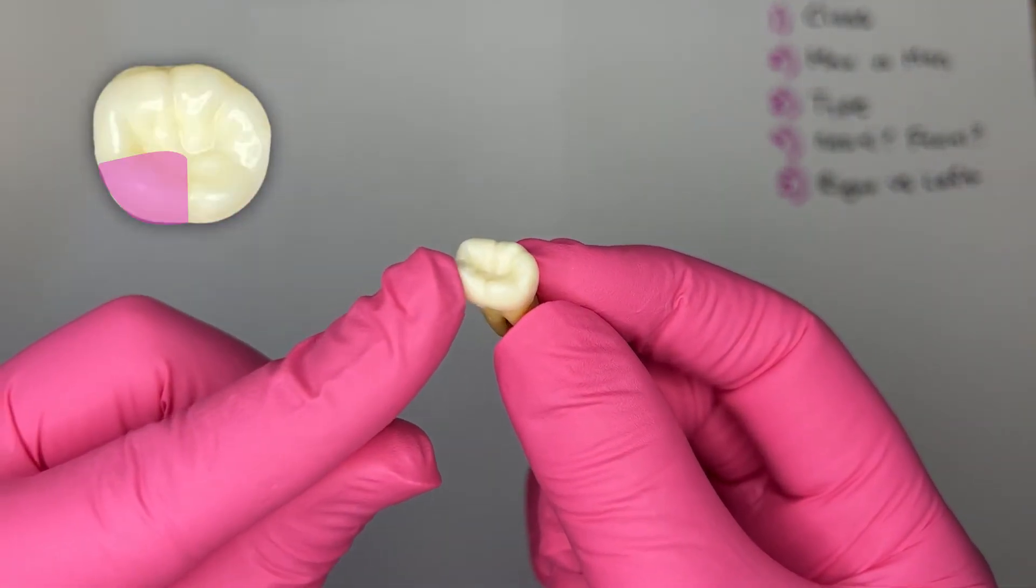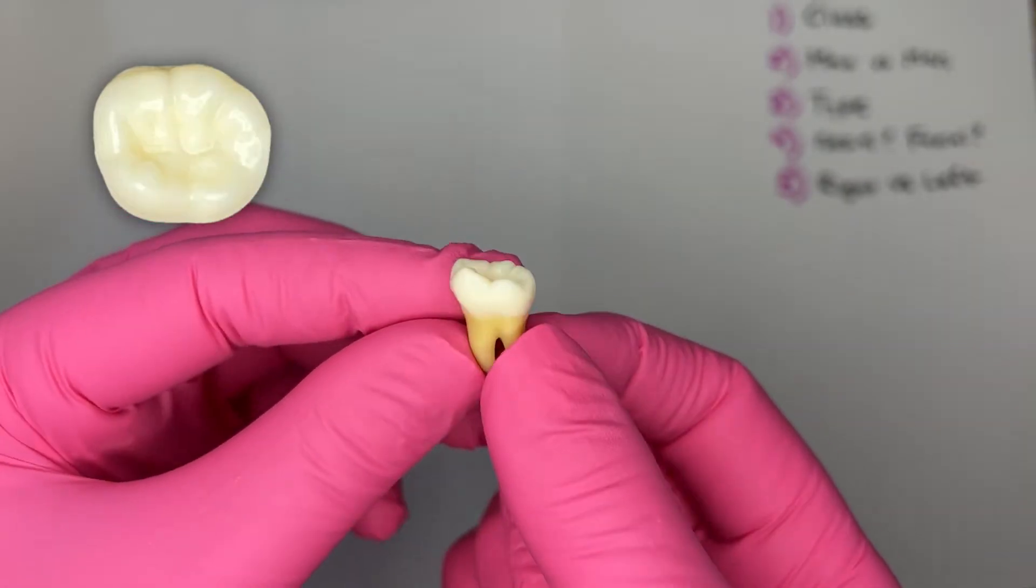With this tooth, I see that there are one, two, three, four, five cusps, so I know that this is a molar.